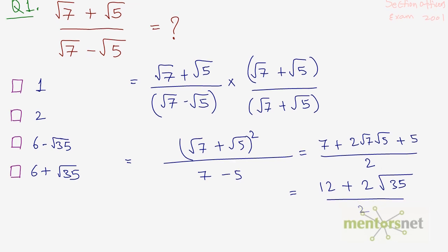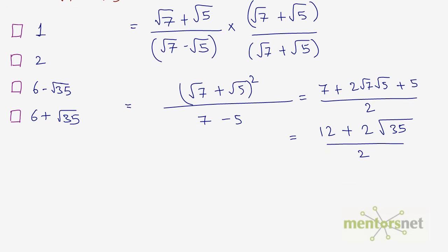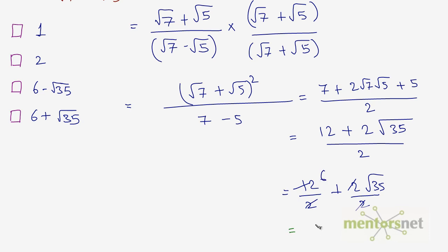This equals 12/2 plus 2√35/2. The 2 in the second term cancels, giving 6 + √35. So the answer to question 1 is 6 + √35.